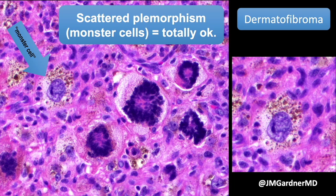There's also some beautiful Touton-like giant cells — they really are Touton giant cells, with a ring of nuclei and foam on the outside. Touton giant cells are actually pretty common in DFs, particularly those with aneurysmal change or hemosiderin deposition. Don't confuse this for a juvenile xanthogranuloma — if you see eosinophils and Touton giant cells, especially in a younger patient or on the face, consider JXG. Dermatofibromas on the face are usually cellular DFs in young patients.